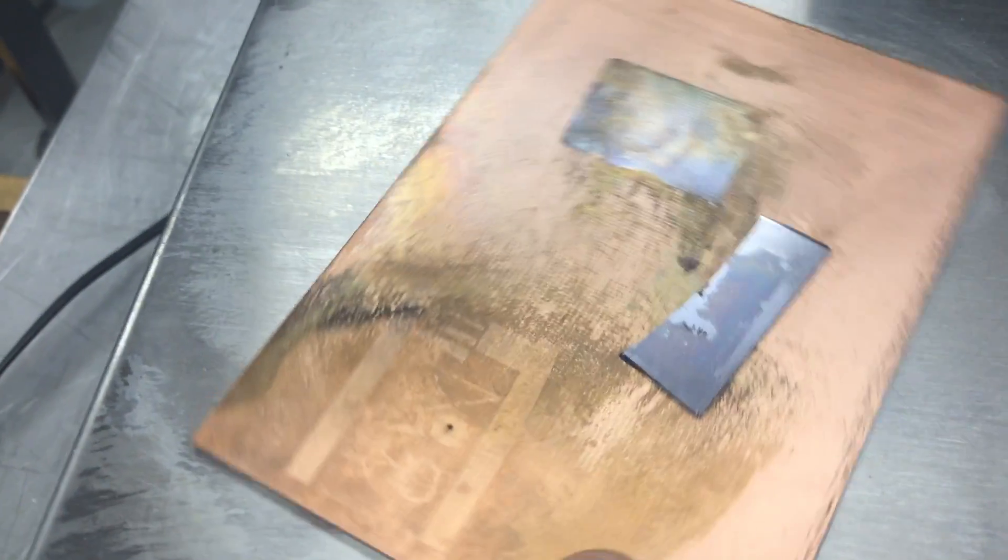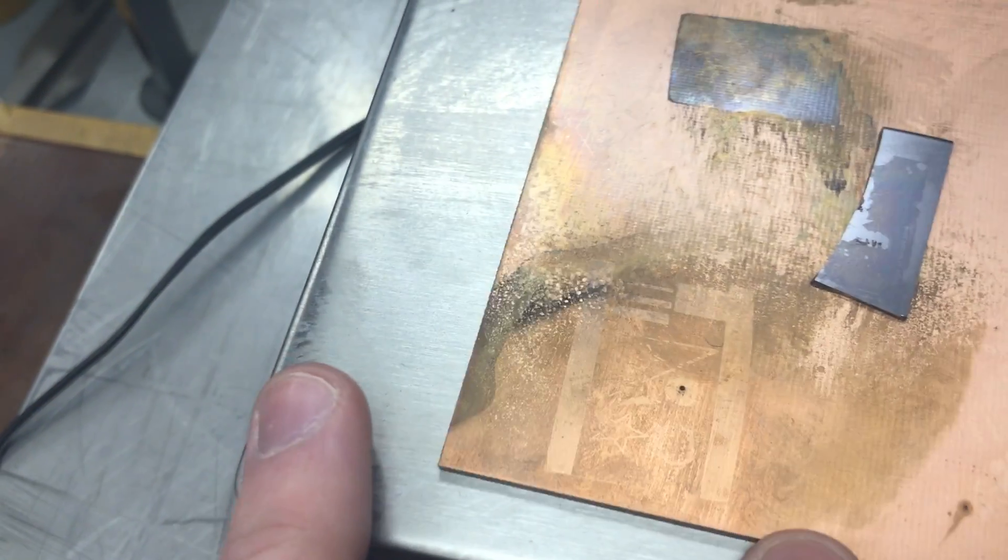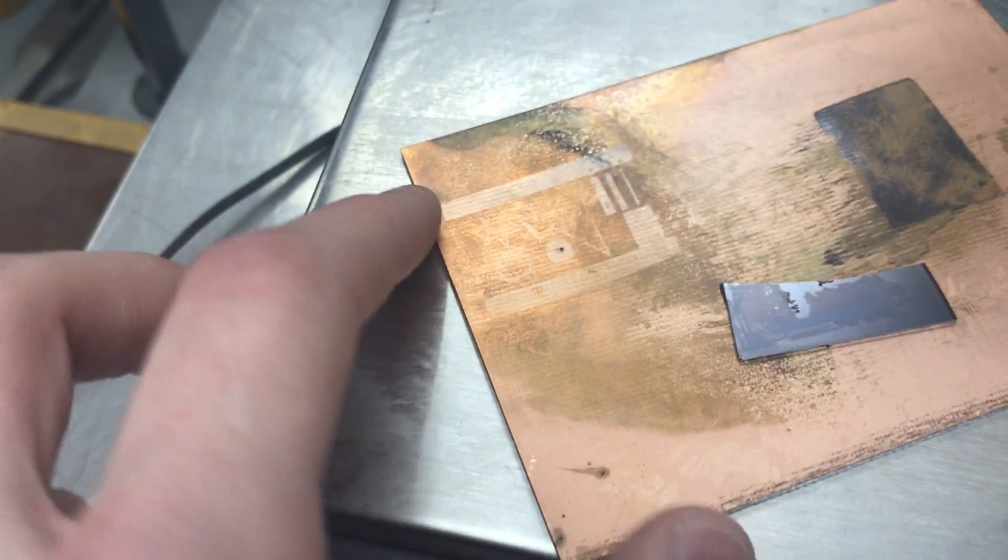And I actually exposed that using a DLP projector. So that's a maskless photolithography method and same with this test pattern here. This test pattern is just in the developed photoresist. It's not actually etched into the copper, as you can see. So that's why the contrast is pretty weak.